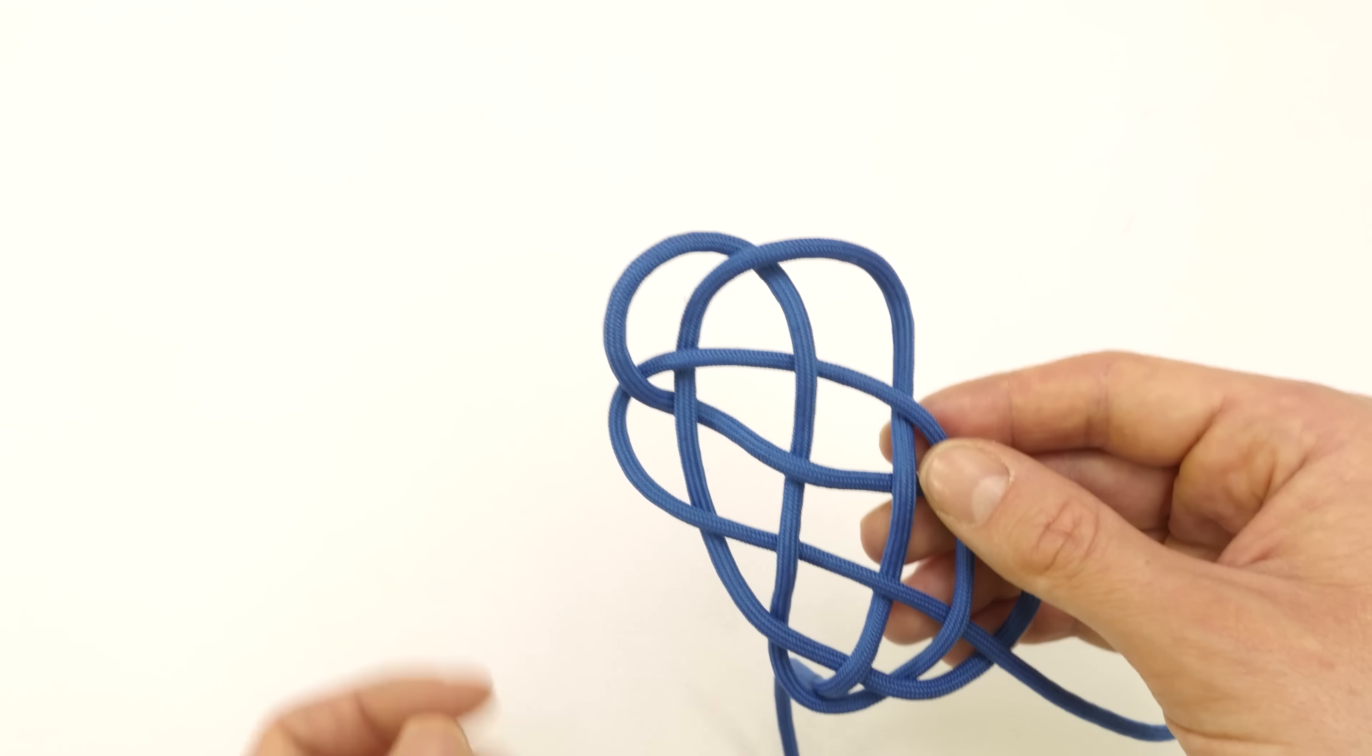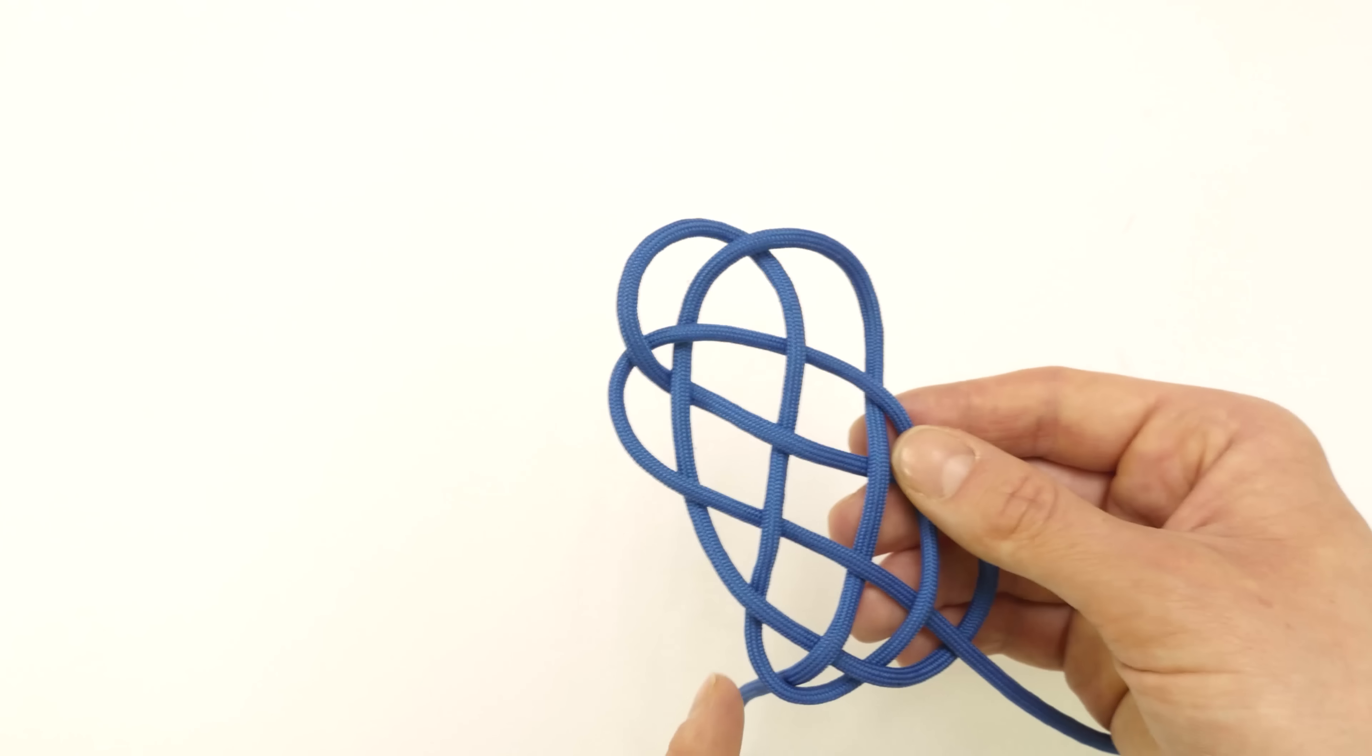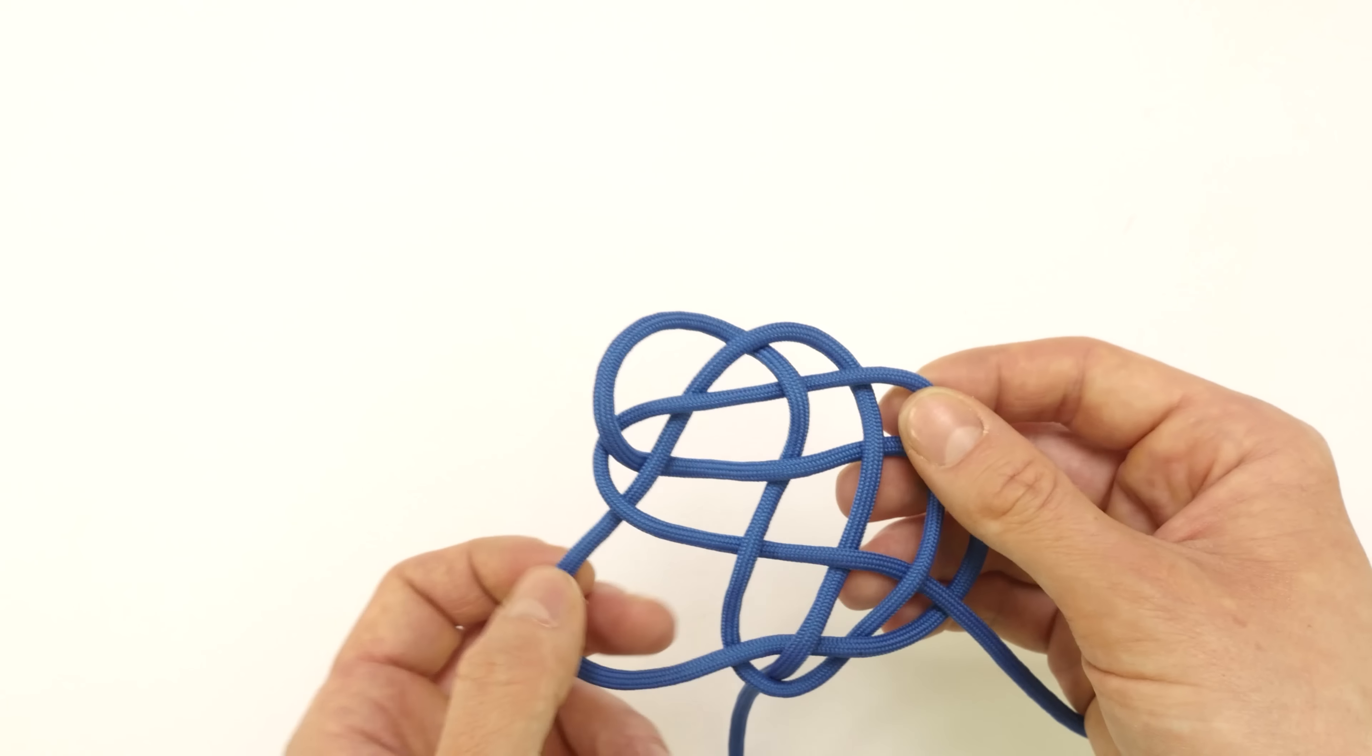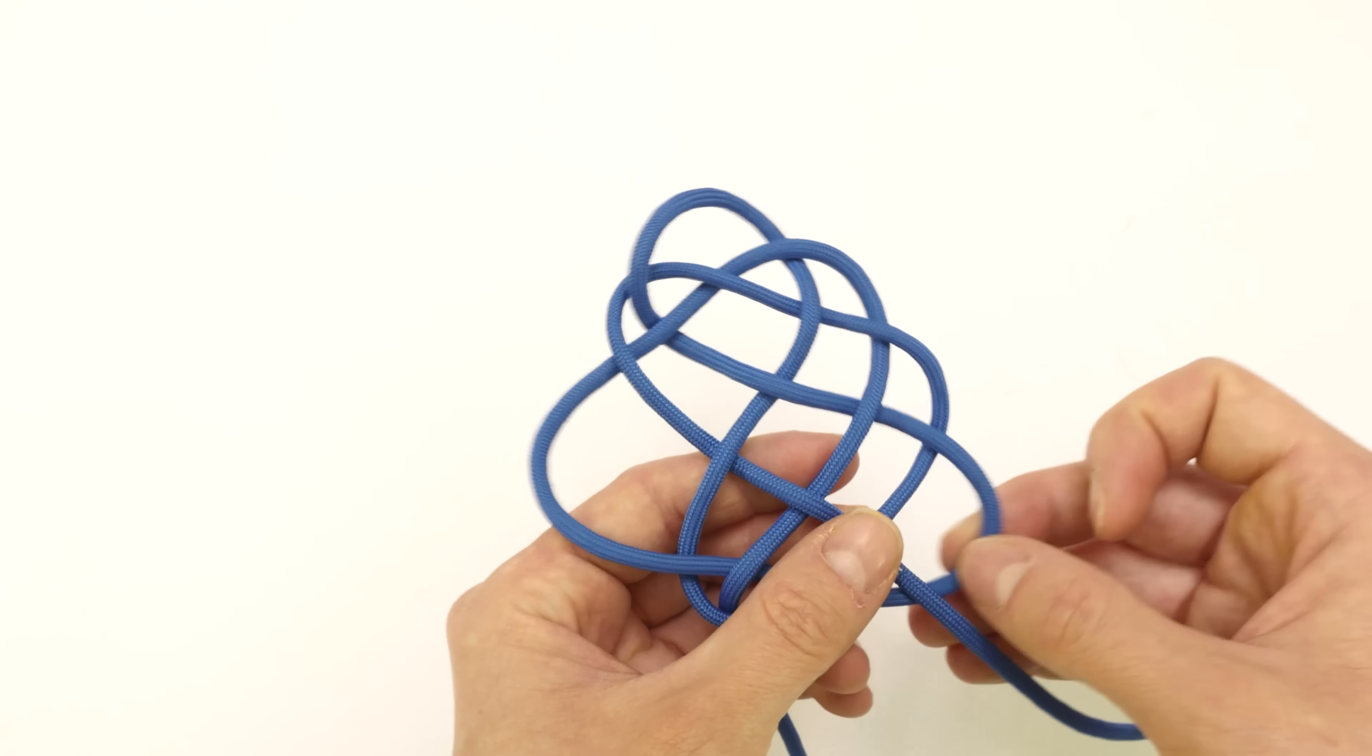If you wanted to retighten it, you would start at one end, then work through the entire knot, and remove the slack.